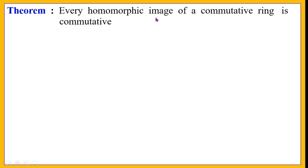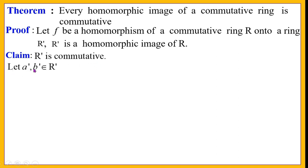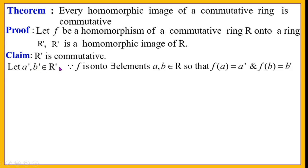Theorem: every homomorphic image of a commutative ring is commutative. Proof: let f be a homomorphism of a commutative ring R onto a ring R', where R' is the homomorphic image of R. We have to show that R' is also commutative. Let a', b' belong to R'. Since f is an onto homomorphism, there exist elements a, b in R such that f(a) = a' and f(b) = b'.